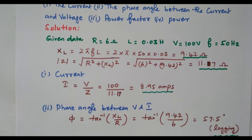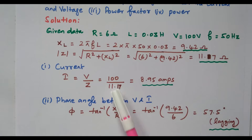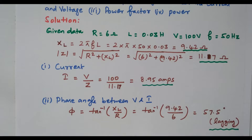Current I = V/Z = 100/11.17 = 8.95 amperes. For phase angle between voltage and current, the formula is θ = tan⁻¹(XL/R) = tan⁻¹(9.42/6) = 57.5 degrees lagging. It is lagging because in a RL circuit with an inductor, current always lags the voltage.